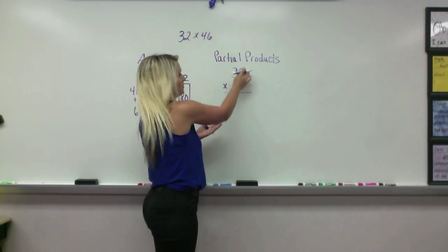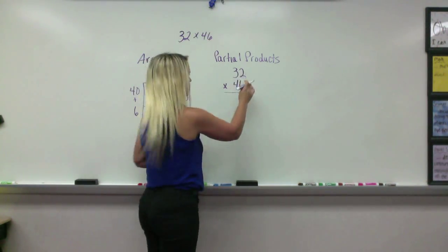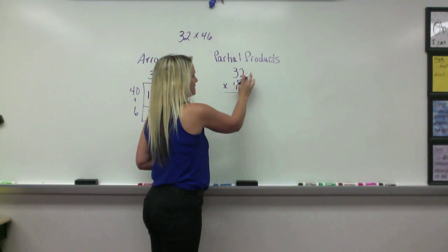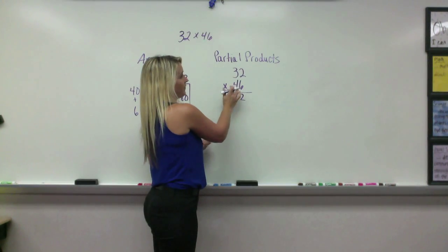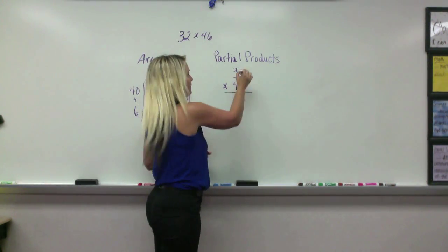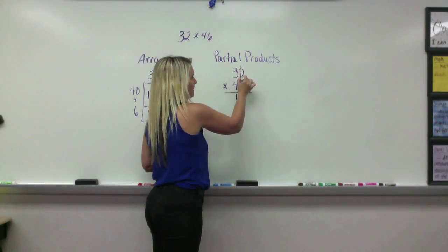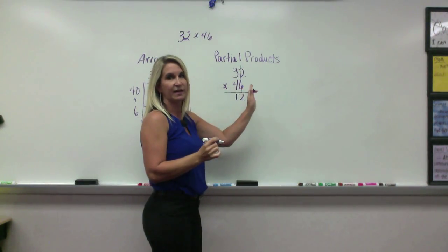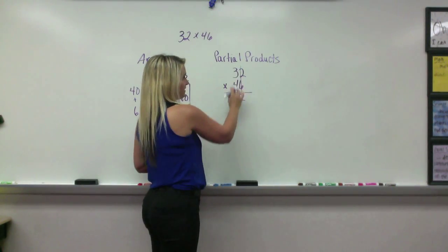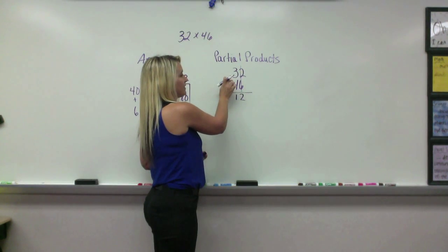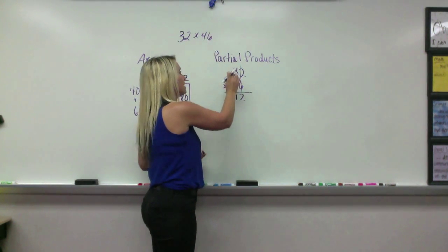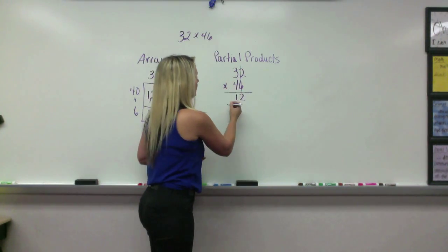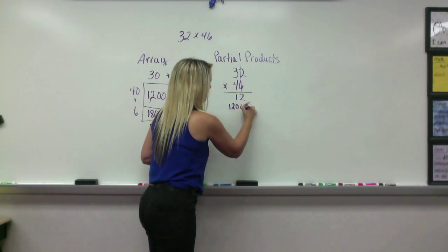So they start with the tens or the ones. It doesn't matter where they start. So here we're going to start 6 times 2, and that's 12. And then we can multiply it. What they usually do is mark that they've already done those two, so they know they've taken care of the ones place. Then they might multiply the tens place. Now this represents 30, not 3. This represents 40. So 30 times 40 is 1,200.